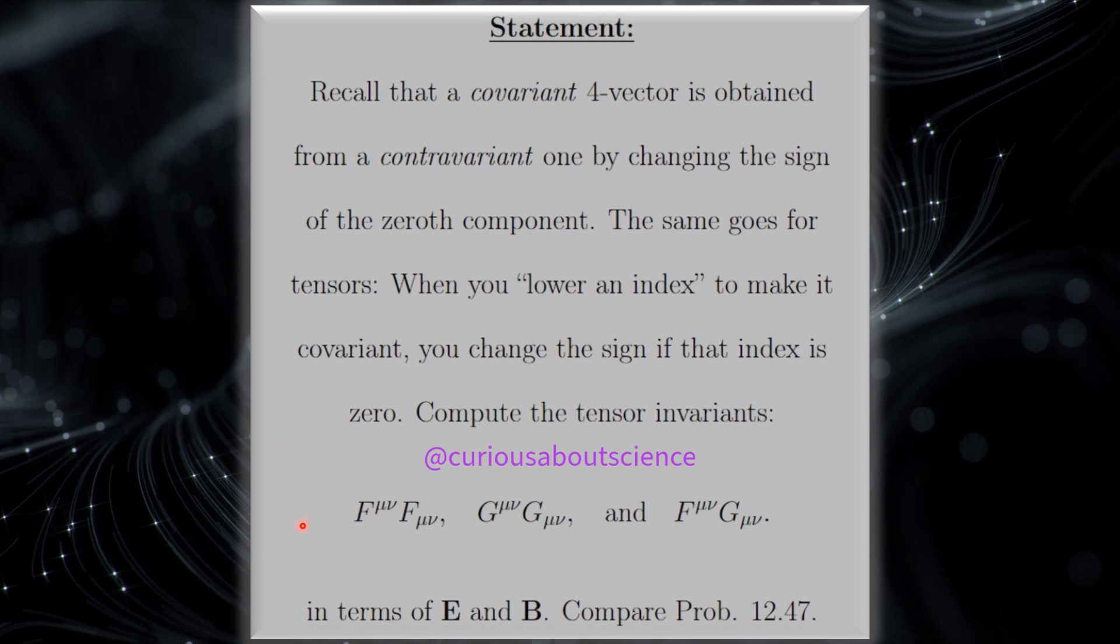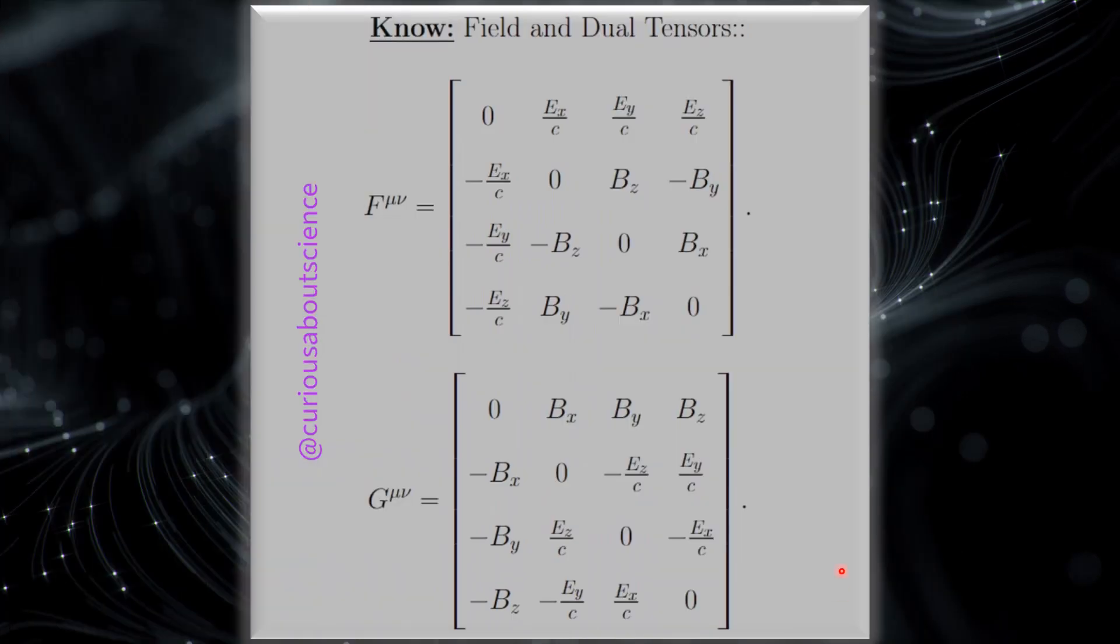So we have F, the electromagnetic field tensor of mu nu with itself, the dual tensor mu nu, and the field tensor with the dual tensor. And we want to calculate these invariants in terms of E and B. We want to compare this with something we found earlier with the results of E dot B in terms of being invariant. So let's go ahead and just dive on in.